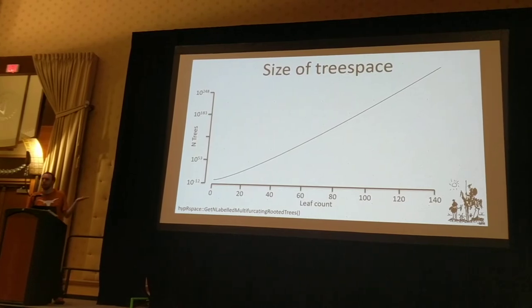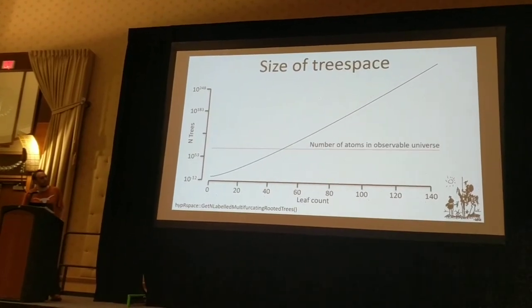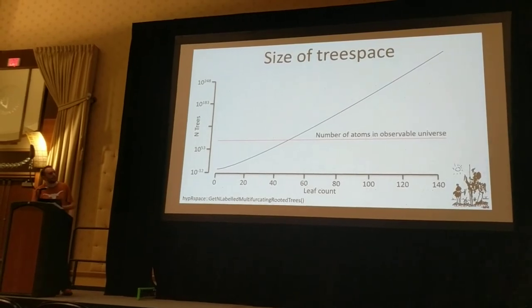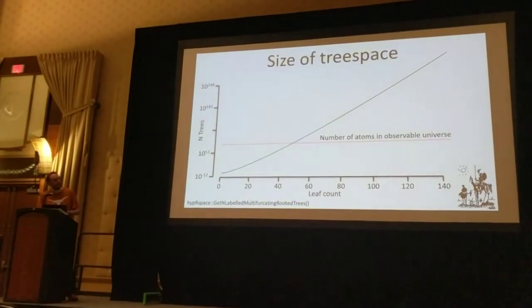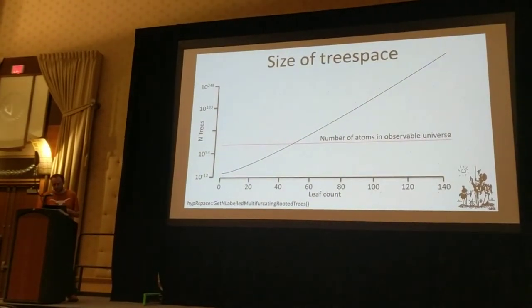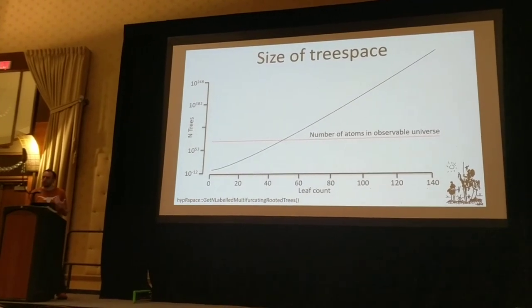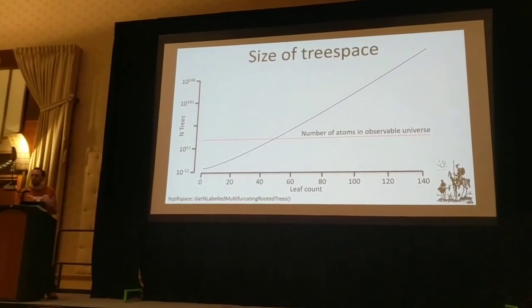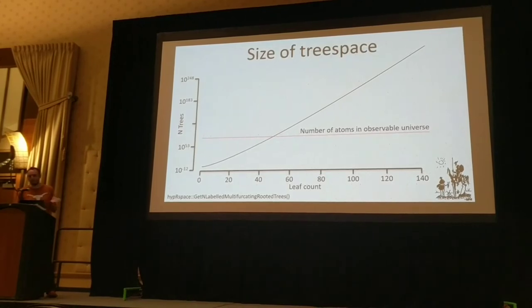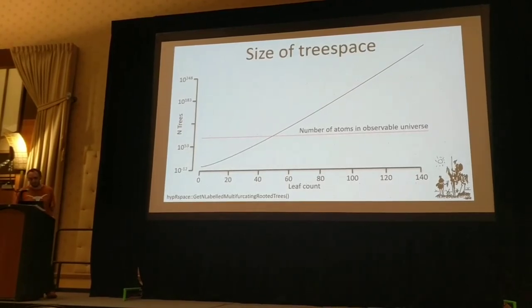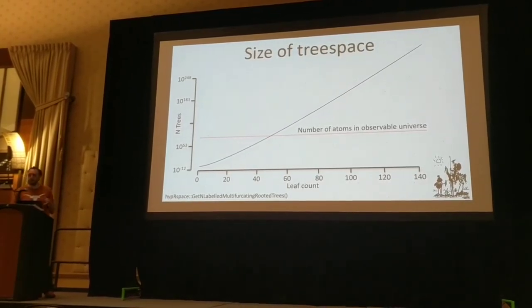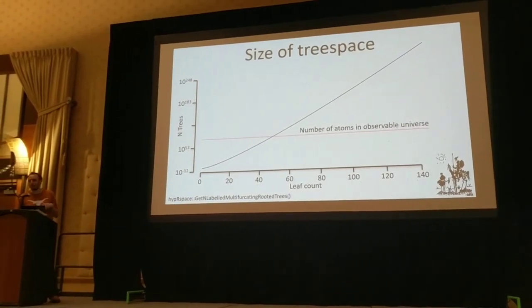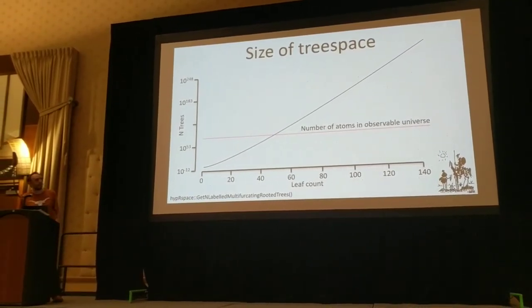These are very high numbers — it's hard to conceptualise. But just to key you in, this is the number of atoms in the observable universe, and we exceed that really quickly. Most people who work on tree space care about the difficulty of finding the optimal tree when doing phylogenetic inference. But today I really want to focus on visualising tree space, and hopefully it's clear that there are lots of uses for that.